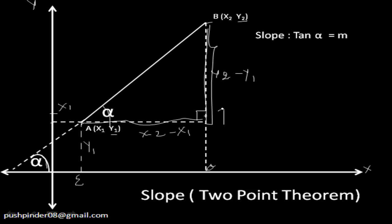Now we just have to find tan α. What is tangent? Tangent equals perpendicular divided by base. If you can see clearly, the perpendicular of this angle equals y2 minus y1, and the base of this angle equals x2 minus x1.